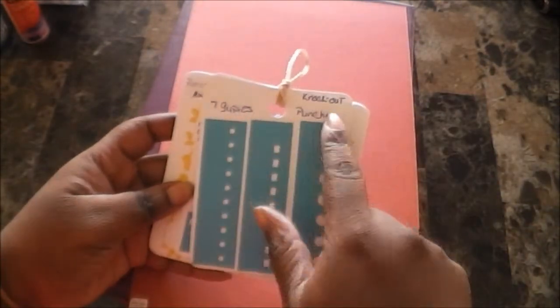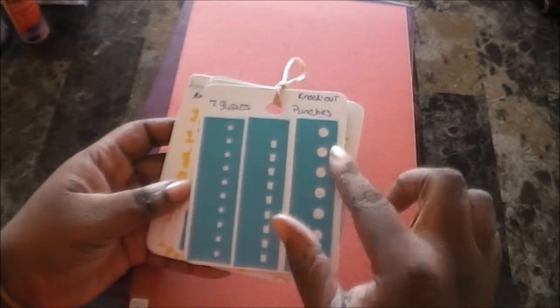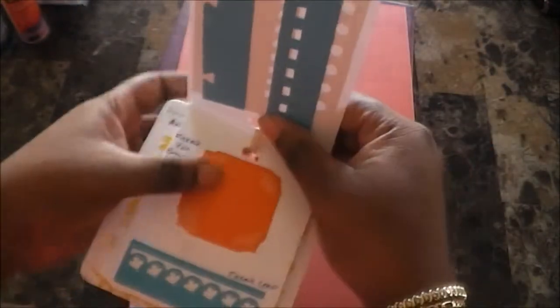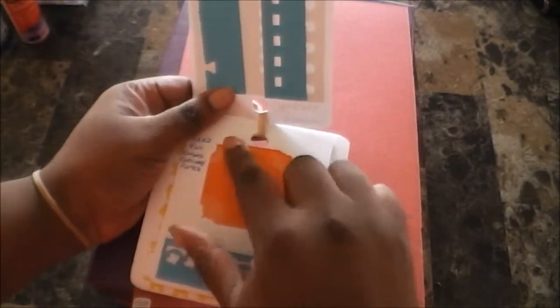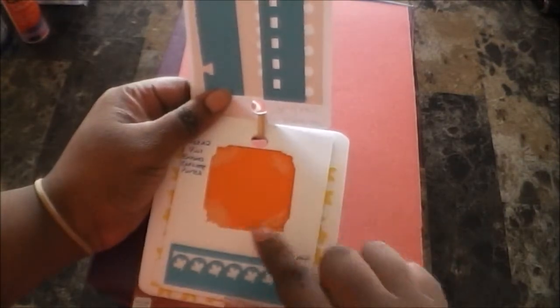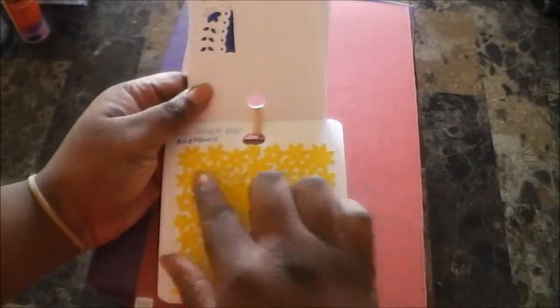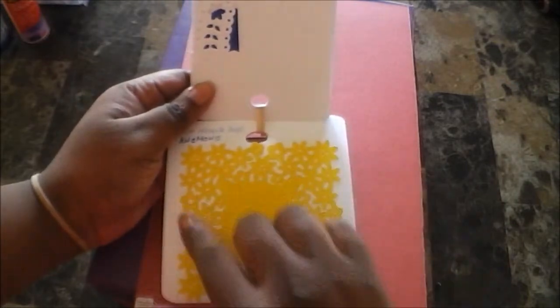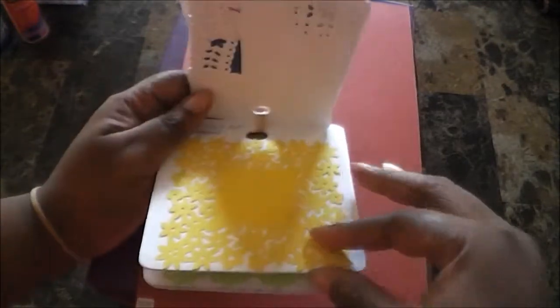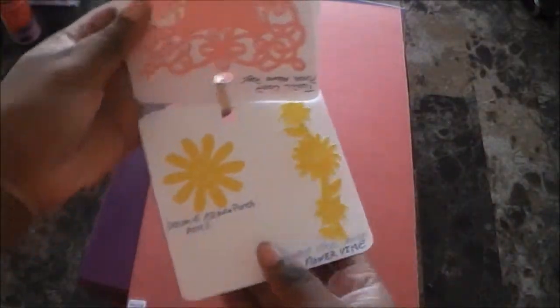So this one tells you it's my seven gypsy knockout punches and it shows you the knockout punches that it came with and it's just on a rubber band. This may be a Fiskars 4-in-1 punch with some embossing edge, some border punches. And so I keep a little legend and for my punch around the page ones, you have it showing the punch around the page and then the individual punches that are inside.